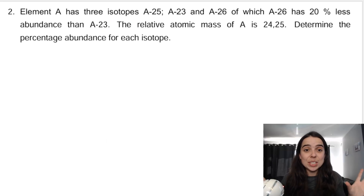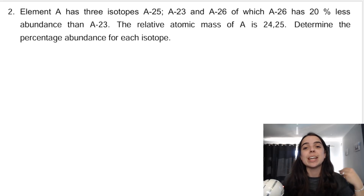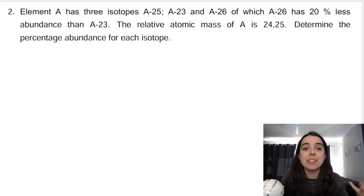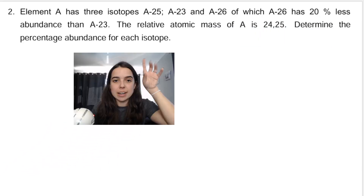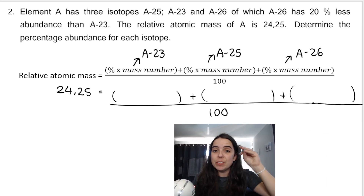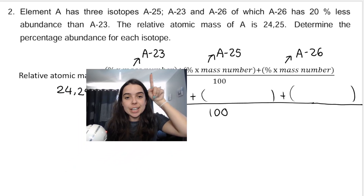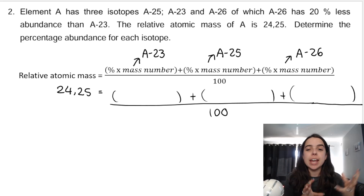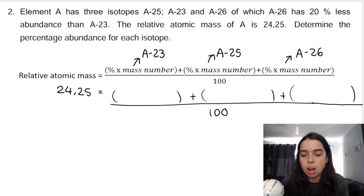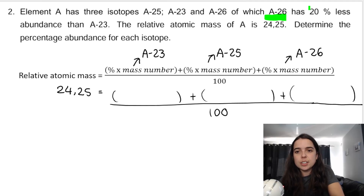Let's do another difficult one. Element A has three isotopes: A25, A23, and A26. A26 has 20% less abundance than A23. Again they give me the relative atomic mass as the answer — determine the percentage abundance for each isotope. Just like in the previous example, we have the answer and each isotope gets its own bracket. The tricky part is determining which one to call x.